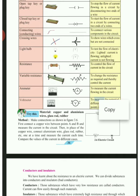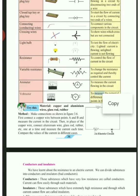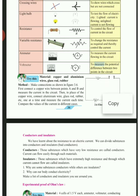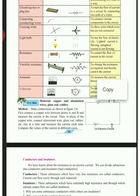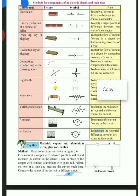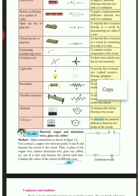Resistance is drawn as zigzag lines — a very important symbol — to control the flow of current in the circuit; it stabilizes the current. Variable resistance is drawn with a resistance symbol and an arrow on it, to change the resistance as required and thereby control the current. Ammeter is denoted by A with positive and negative, to measure the current flowing in the circuit. Voltmeter is always denoted by V, to measure the potential difference between two points in the circuit. These are all the important symbols represented in our electric circuit.